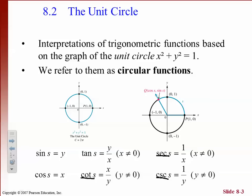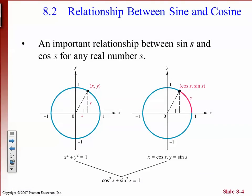All these s's here are actually the radian measures — that's the arc length around the circle. There's an important relationship: sine corresponds to the y number, and cosine corresponds to the x number. So sine is y, cosine is x. Going around the circle, right here x is 1, y is 0; up at the top x is 0, y is 1; over here x is negative 1, y is 0; and down here x is 0, y is negative 1.